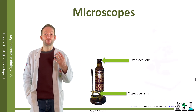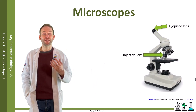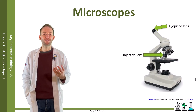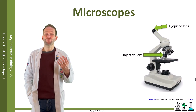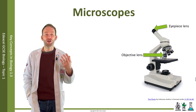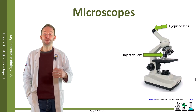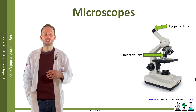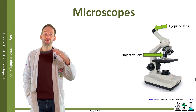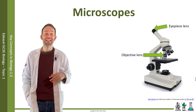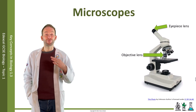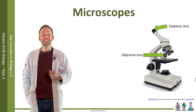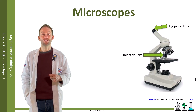Modern light microscopes work in the same way as Hooke's, but just with more powerful lenses. To calculate the total magnification of the microscope, you multiply the magnification of those two lenses together. So if you have a x10 eyepiece lens and a x40 objective lens, the total magnification is x400.